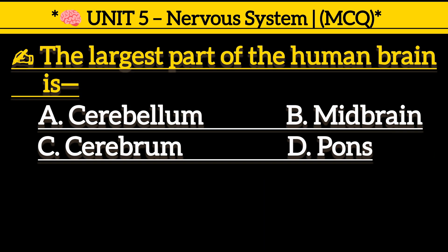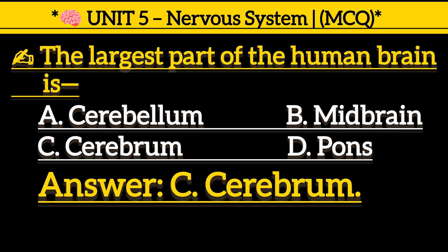The largest part of the human brain is: Option A, cerebellum. Option B, midbrain. Option C, cerebrum. Option D, pons. Correct answer is Option C, cerebrum.